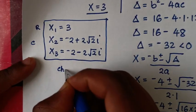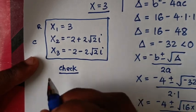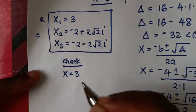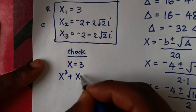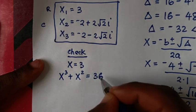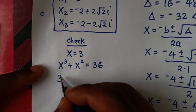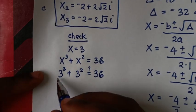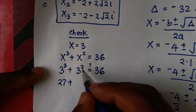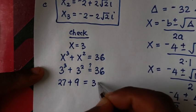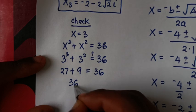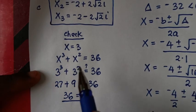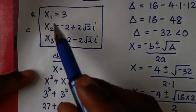Let's check for one of the values of x. We'll check for this real solution, which is x is equal to 3. To check for x is equal to 3, from our problem which is x power 3 plus x power 2 is equal to 36, we substitute x which is 3, so it will be 3 power 3 plus 3 power 2 is equal to 36. Now 3 power 3 is 27, plus 3 power 2 is 9, is equal to 36. This plus this is 36, is equal to 36. So right side and left side are equal, then it is true for the value of x is 3, and also these complex solutions are correct.